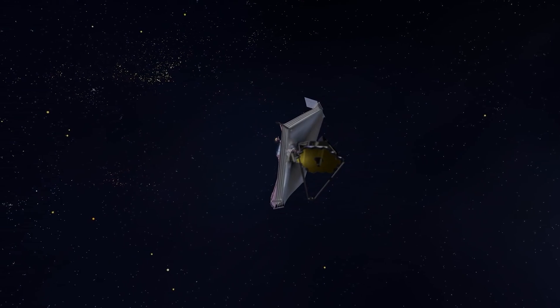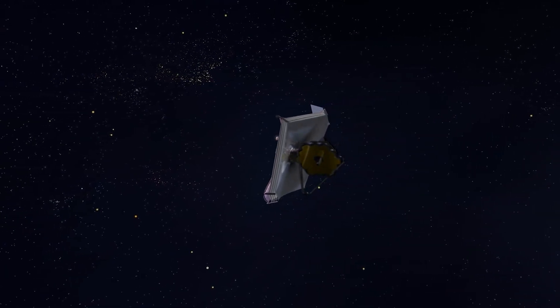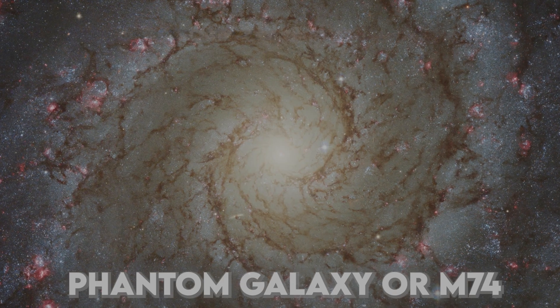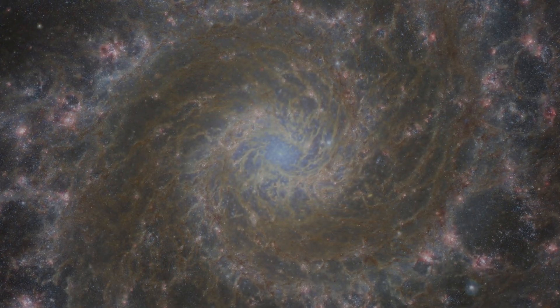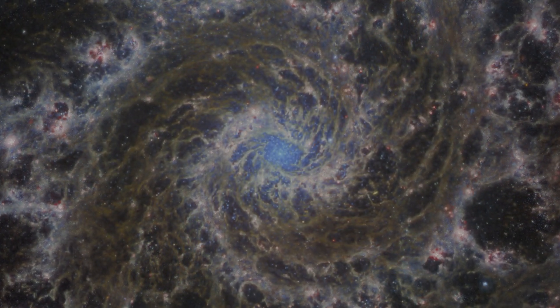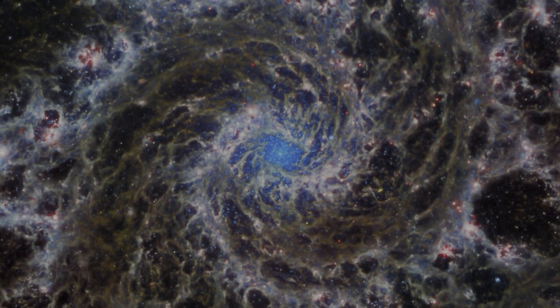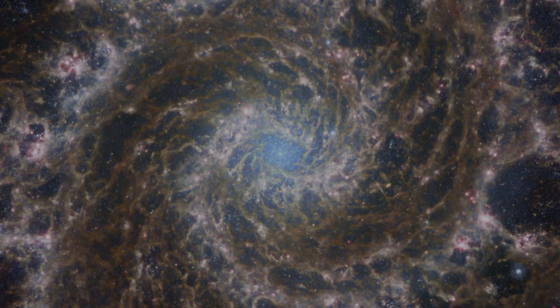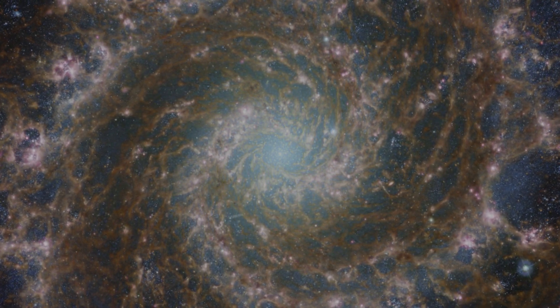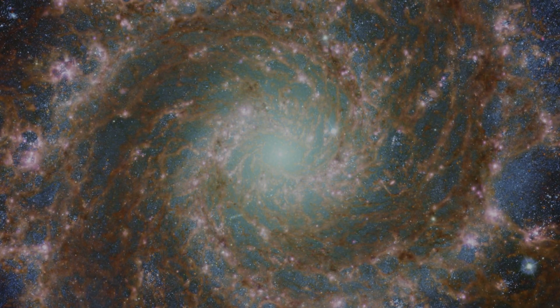In one of its most captivating observations, Webb captured the Phantom Galaxy, or M74. This stunning spiral galaxy, known for its nearly perfect symmetry, revealed intricate dust lanes and a haunting glow when viewed through Webb's mid-infrared range.